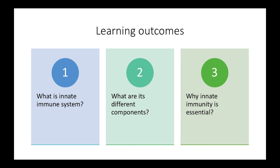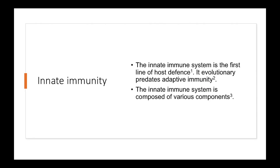Now, let's understand about innate immunity. The innate immune system is the first line of defense in the body and it evolutionarily predates adaptive immunity. The innate immune system is generally for the protection of the body against any pathogen or any virus.